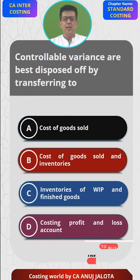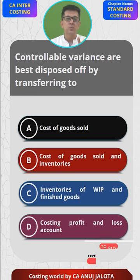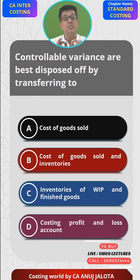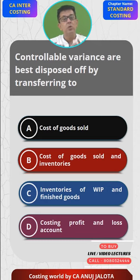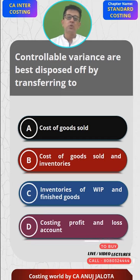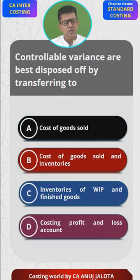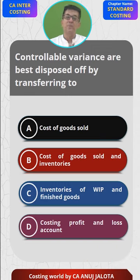Our purchase manager was a bigger idiot — he purchased at Rs. 2.6. So standard was set at Rs. 2, and he purchased at 2.6, giving a variance of 0.6. This 0.6 can be split into two parts: 0.5 is uncontrollable variance — it is not the mistake of the purchase manager. But the other 0.1 — had he negotiated properly, he would have purchased at 2.5, but he purchased at 2.6. So this 0.1 is the controllable variance.